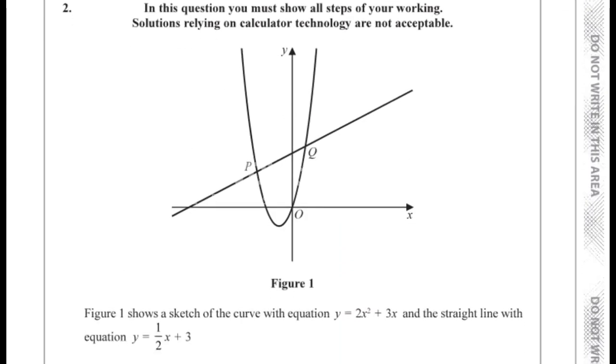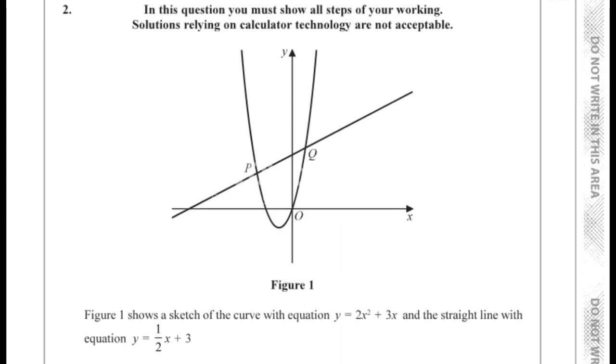Here we're given a graph with a quadratic graph and a linear graph, a pair of axes. They gave the equation of the curve, which was y equals 2x squared plus 3x, and the equation of the straight line, which is y equals a half x plus 3.